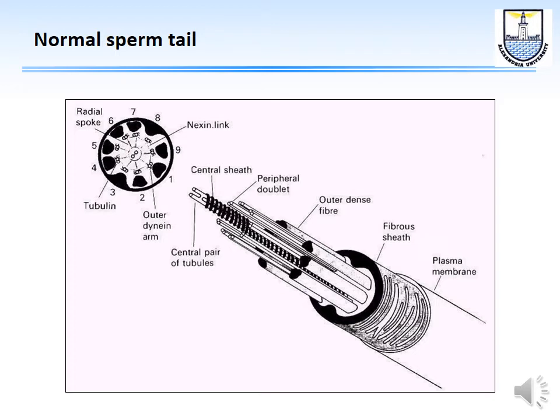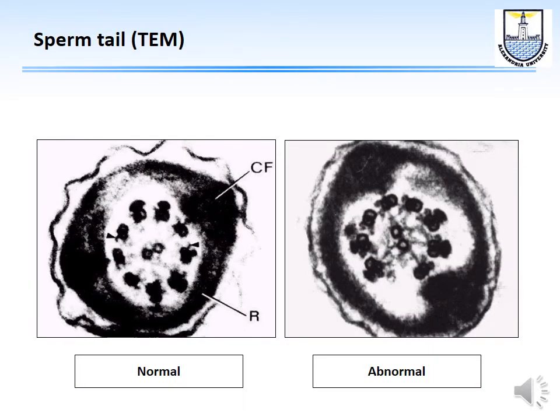Some syndromes are characterized by formation of abnormal sperm. The normal sperm tail has nine dynein arms, but in Kartagener syndrome, there is an abnormal distribution — only eight arms rather than nine.